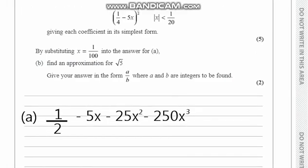Now coming on to part B. Part B states: by substituting x equal to 1/100 into the answer for A, find an approximation for root 5. Give your answer in the form a/b where a and b are integers to be found.